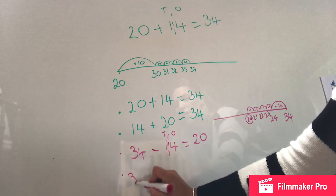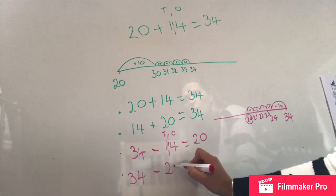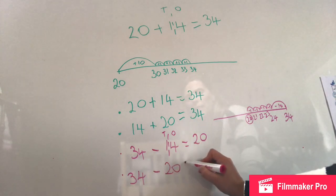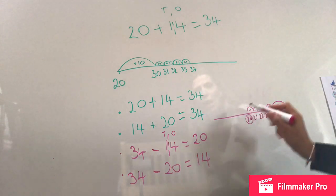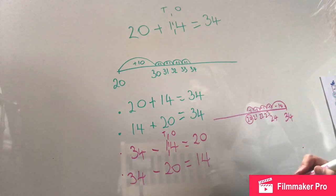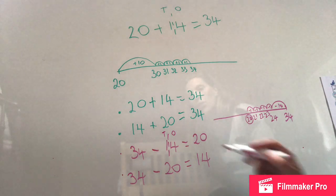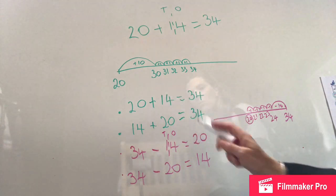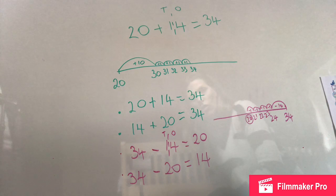So 34 again because it's the biggest number. Now this time I took away 14, so this time I'm going to take away 20. That's going to leave me with 14. Can you see how I'm checking my answers all the time to make sure that I am still correct? I'm not just guessing — I am using those same three numbers because they are correct.